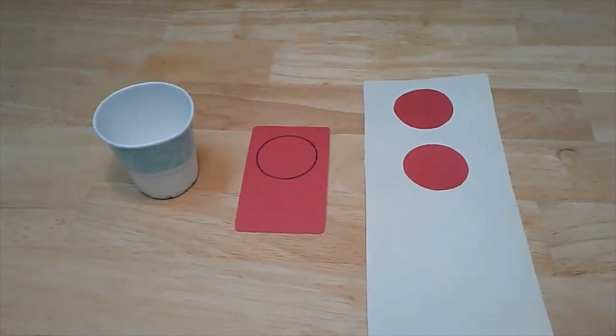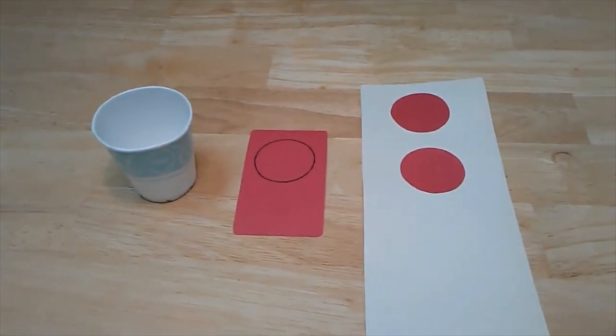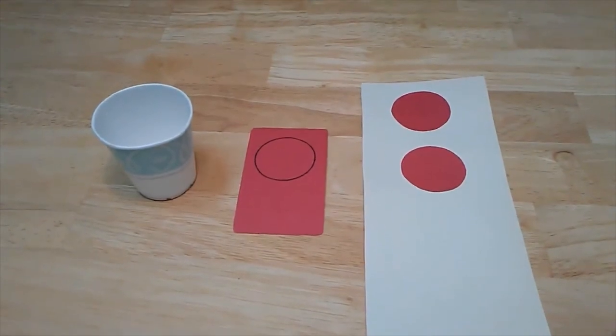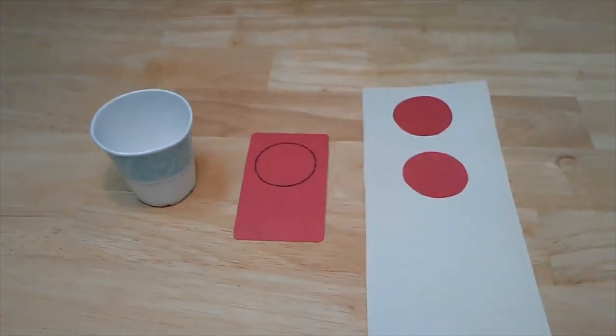Then I made a smaller flower. Using my paper cup I traced four circles on a piece of construction paper. I cut out the circles.